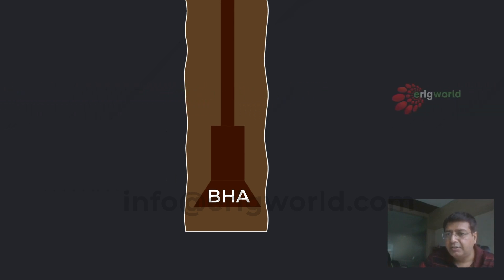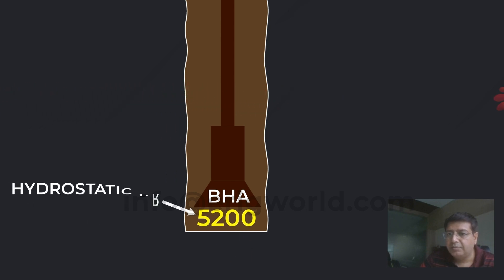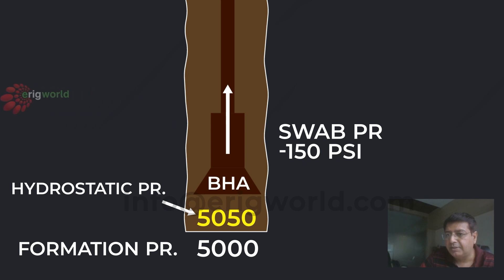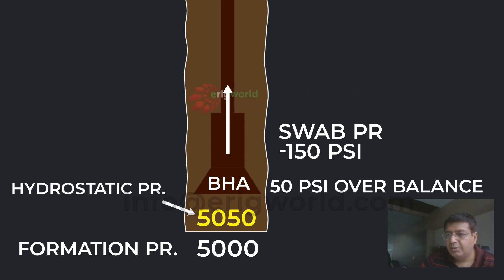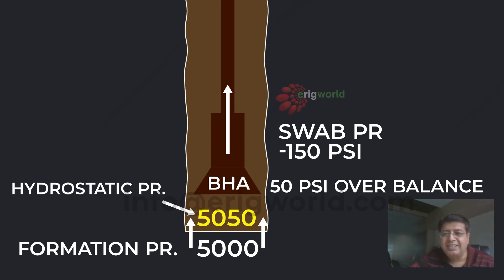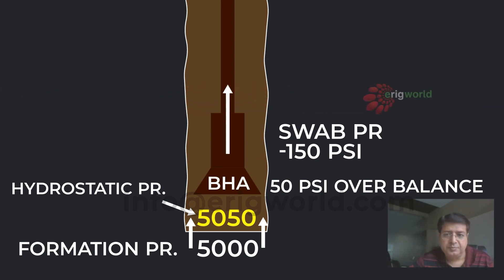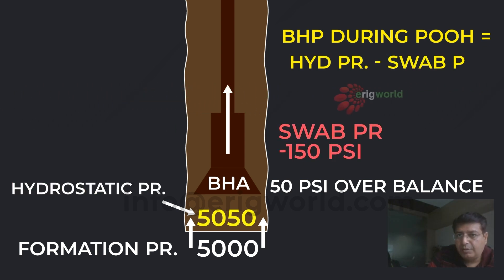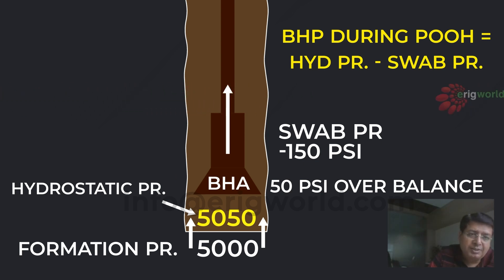As a numerical example: in static conditions, hydrostatic pressure is 5200 psi and formation pressure is 5000 psi. When making an upward movement, hydrostatic pressure drops due to the suction effect. If the swab pressure is 150 psi, the remaining hydrostatic pressure is 5050 psi — still 50 psi of overbalance, so a flow check would show no kick. The immediate effect of swabbing is a reduction in BHP. A kick occurs only when BHP drops below formation pressure. The formula is: BHP during pullout = Hydrostatic Pressure − Swab Pressure, where swab pressure depends on the four factors discussed.